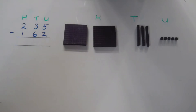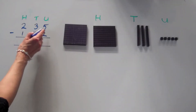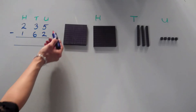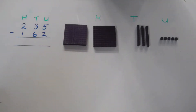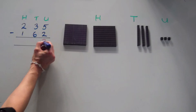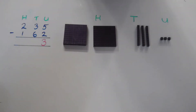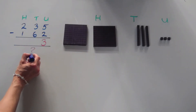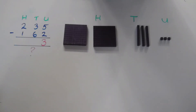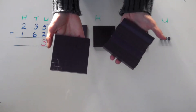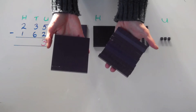Our next calculation is two hundred and thirty-five subtract one hundred and sixty-two. Starting with the units column: five subtract two is three — that works. Moving on to the tens column, we've got three tens and we need to take away six tens. How can we take away six from three? We haven't got enough. But we need to remember that we can exchange one hundred for ten tens — that's going to help us.